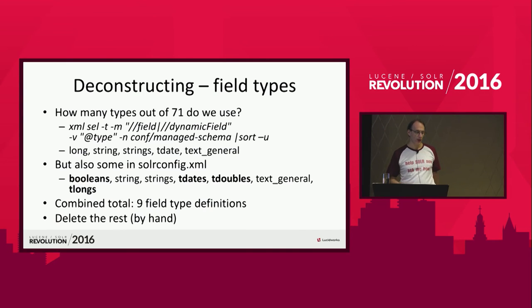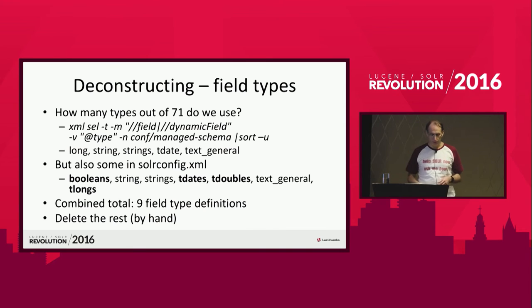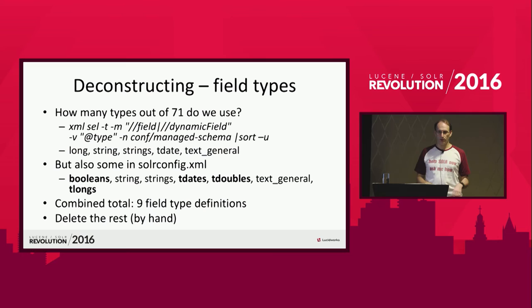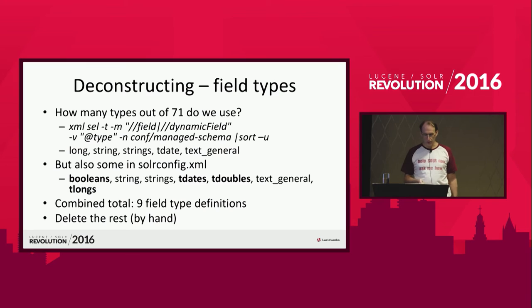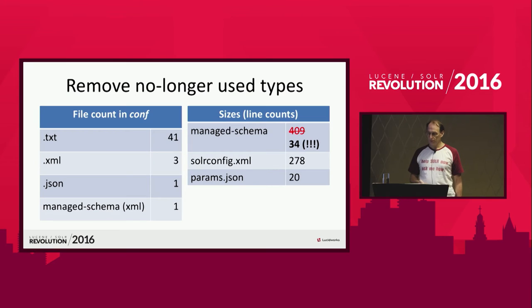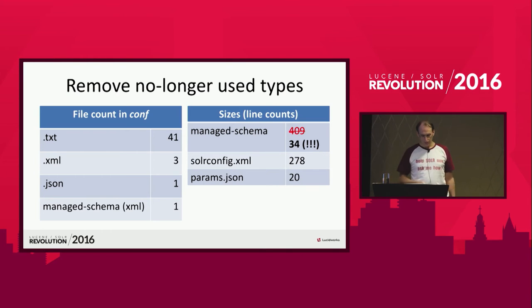We have 71 types — how many are we actually using? Run a query to find field type usage in managed schema, then look in solrconfig.xml manually for additional field type references. We got five in the schema and four more in solrconfig — nine altogether. So 62 can go. We're down to 34 lines. Down from, well, a lot.